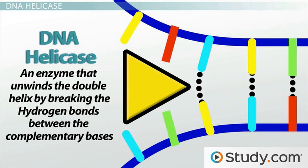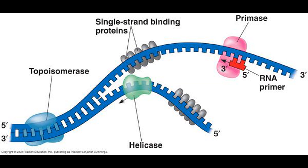Breaking the bonds is done by another enzyme called DNA helicase. This causes DNA to look like a sort of Y, called a replication fork. Single-stranded binding proteins also attach to the DNA strands to stabilize them. This results in two separate strands, each acting as a template for the synthesis of a new DNA strand. This is why the separated strands are also called the template strands. The two template strands are pointing in opposite directions: one 5' to 3' and one 3' to 5'.